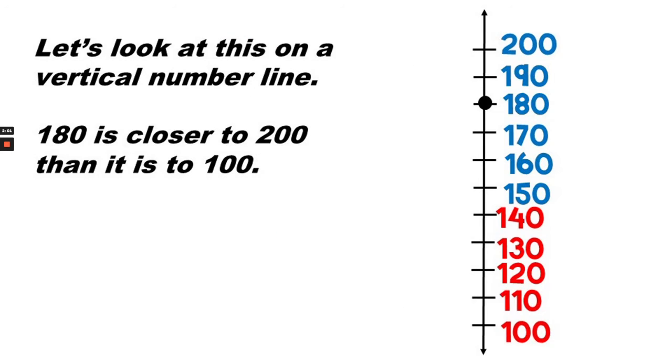Okay, let's look at this on a vertical number line. Vertical means up and down. 180 is closer to 200 than it is to 100.